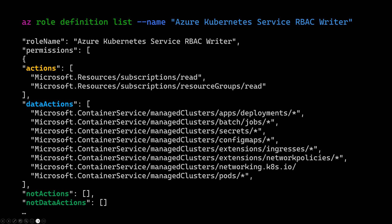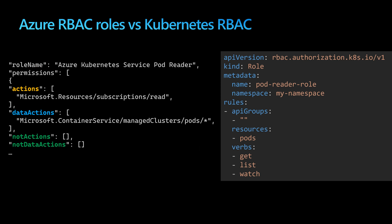Actions are for the management plane for Azure, and data actions are for the data plane for the AKS cluster. These are the permissions that the Azure Kubernetes Service RBAC Writer can perform — for example, all actions for deployments using slash asterisk, meaning it can get, delete, edit deployments, and so on. There are also two other sections: not actions and not data actions, used to exclude certain permissions. This role definition is similar to the Kubernetes native role, where you define the kind, role, and resources the role can act on, like get, list, and watch for pods.